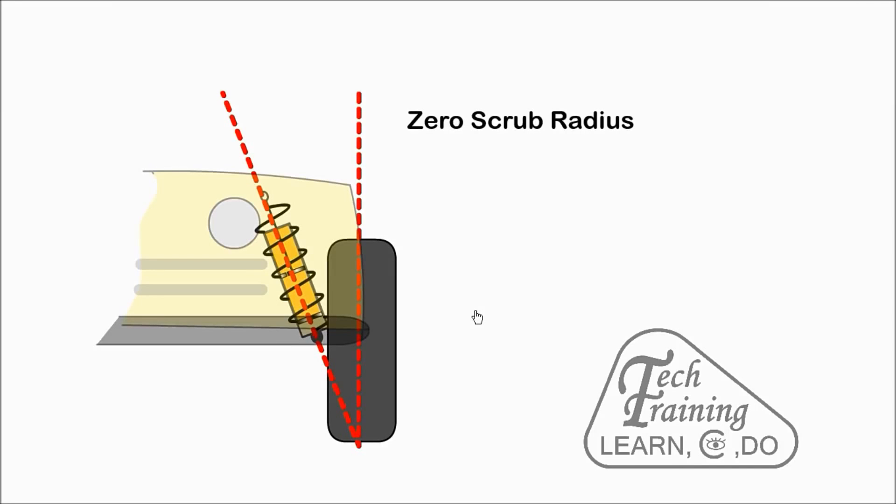Scrub axis is the distance between the steering axis road contact point and the centre of the wheel. When both meet at the same axis, it is called zero scrub. When the steering axis point is towards the inside of the wheel, it is called positive scrub radius.